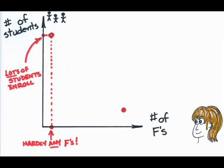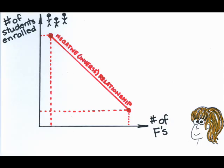If I hardly ever fail anyone, lots of students are going to take my class. So a very small number of F's translates to a fairly high level of enrollment. So I'm finding that there's a negative or inverse relationship between the number of F's that I give and future enrollment in my class. This negative or inverse relationship exhibited between the two variables has a negative slope.